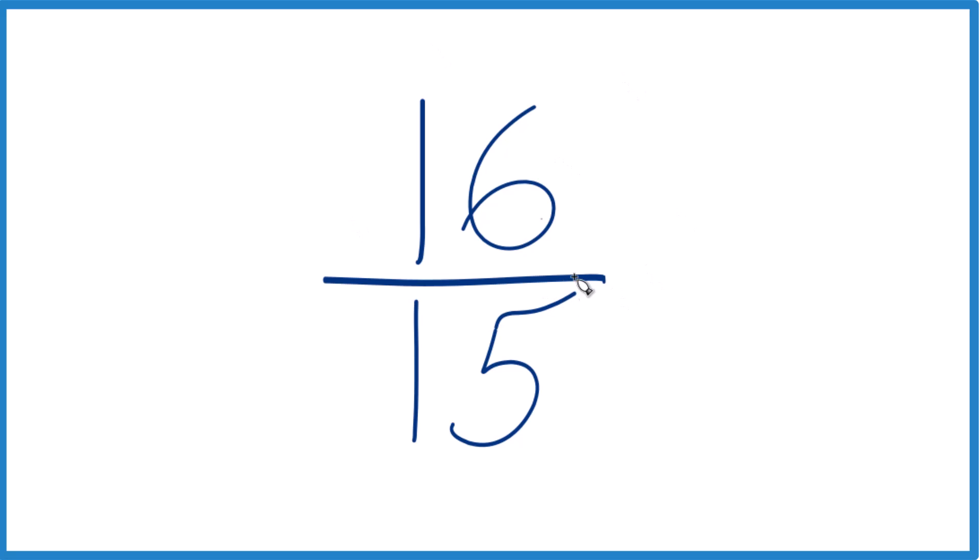So when we look at it, to simplify a fraction, we want to find a number that goes into both the numerator and the denominator evenly. So a whole number that goes into each evenly. And the only thing that goes into 16 and 15 evenly is 1.